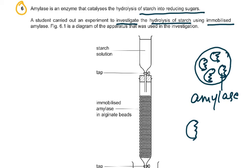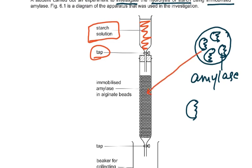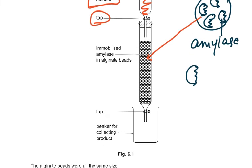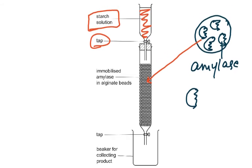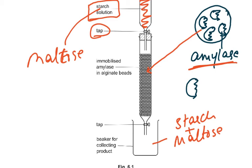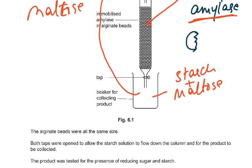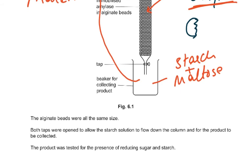Figure 6.1 shows the apparatus used. You have a column full of starch solution, then a top tap, then immobilized amylase — alginate beads with the amylase enzyme stuck onto them — then another bottom tap, and a beaker for collecting the product. The starch solution flows through the column, the amylase converts starch to maltose, so you should collect maltose in the beaker. If some starch has not been digested, you would get starch plus maltose.